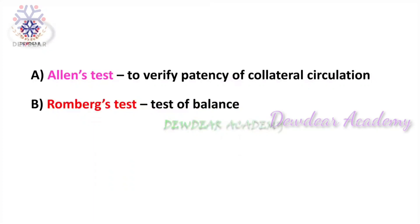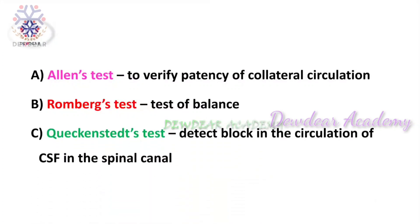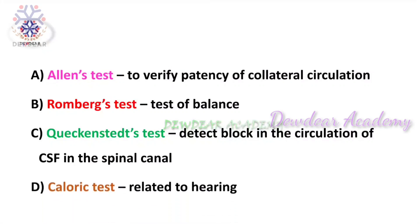Romberg's test assesses the patient's balance or quantifies balance. The Queckenstedt test detects a block in the circulation of cerebrospinal fluid in the spinal canal, done by briefly compressing the jugular veins. Caloric stimulation is done to diagnose damage to the acoustic nerve, which is involved in hearing and balance.